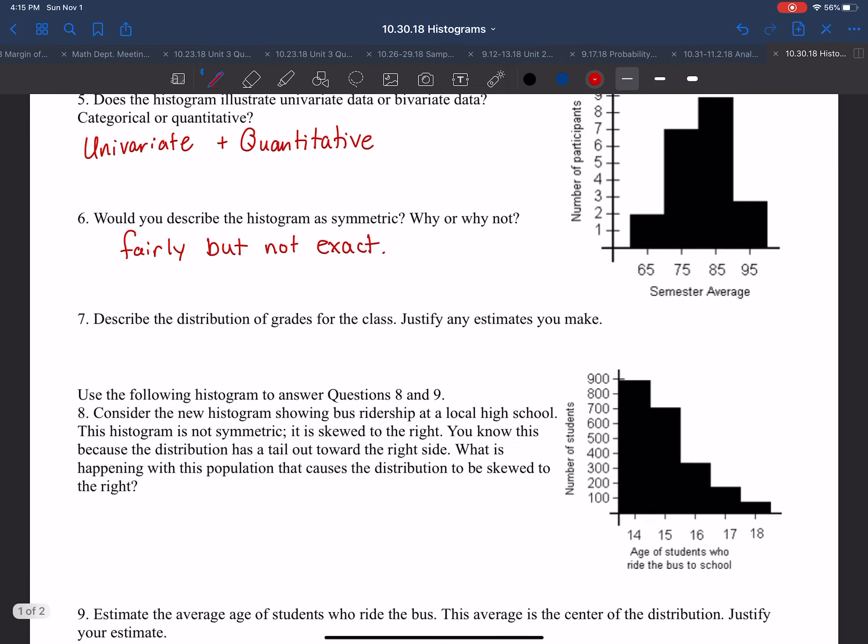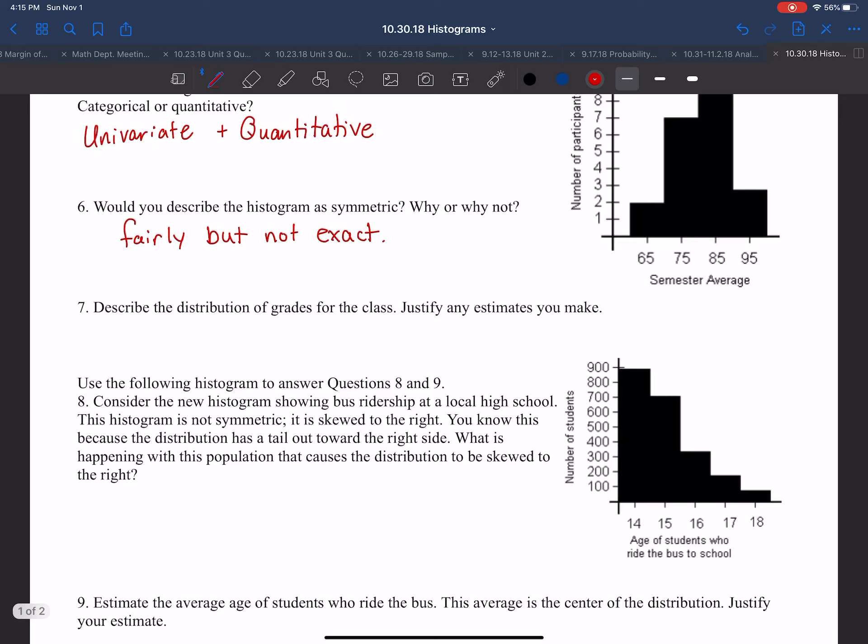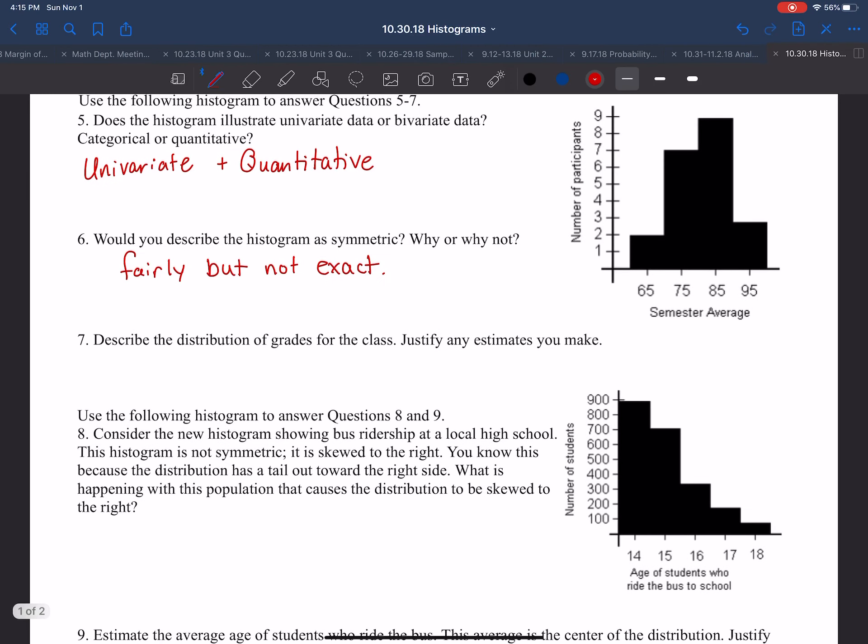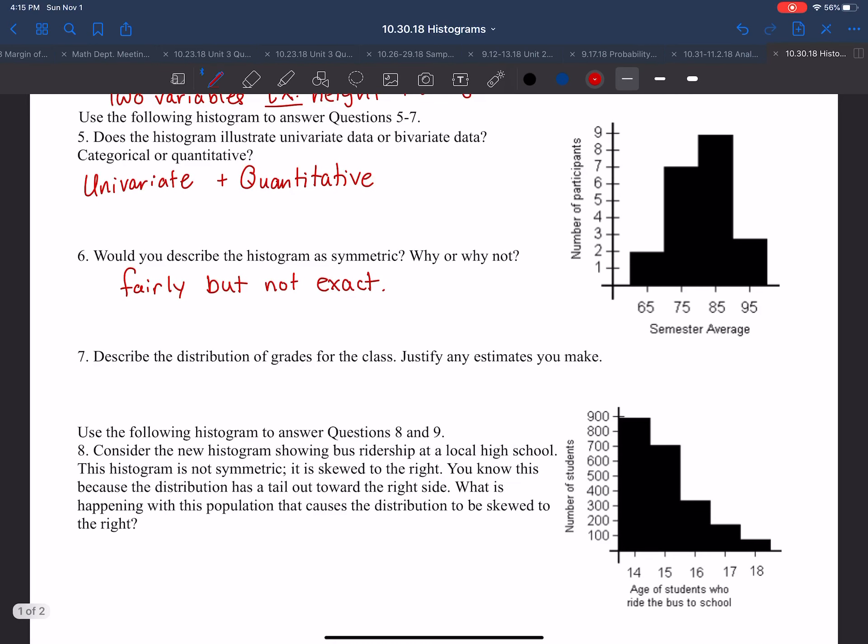Number seven says, describe the distribution of grades for this class and justify any estimates you make. If I'm trying to find the average, I want to look at the bars in the histogram. From 65, we have 2. For this bar, we have 7. For this bar, we have 9. For this bar, we have 3. So if I were to try to find the average,